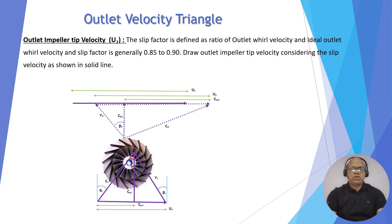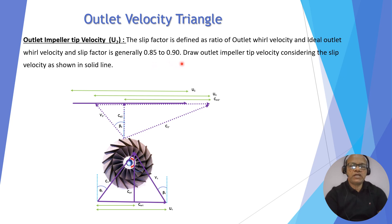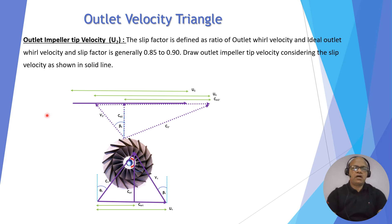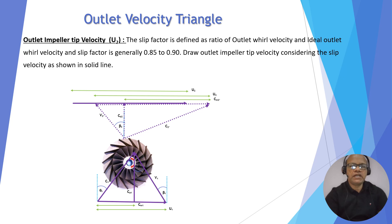Now we need to draw the actual outlet velocity triangle, that is with consideration of slip factor. Normally, slip factor falls between 0.85 and 0.9. We draw the outlet impeller tip velocity considering the slip velocity — this amount is the slip velocity. Because there is slip, this point will be behind the ideal case by the slip velocity, and this is drawn as a solid line.